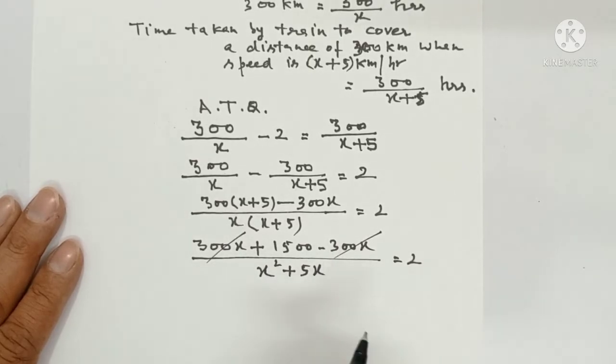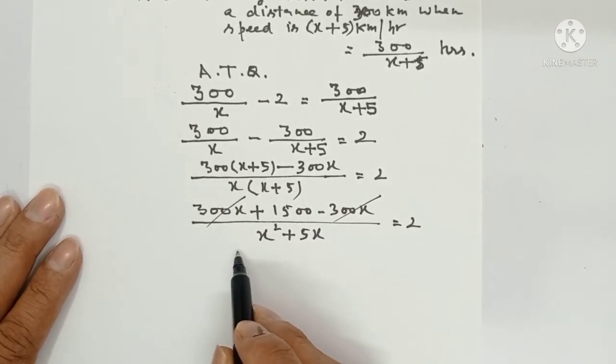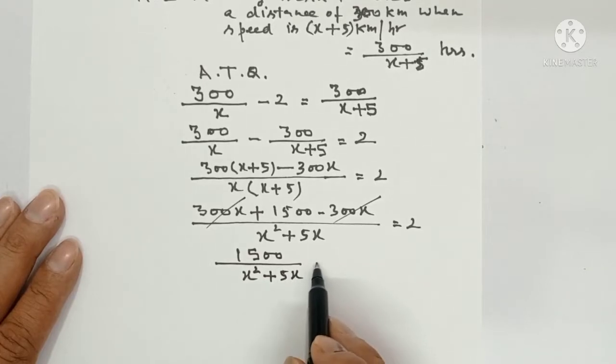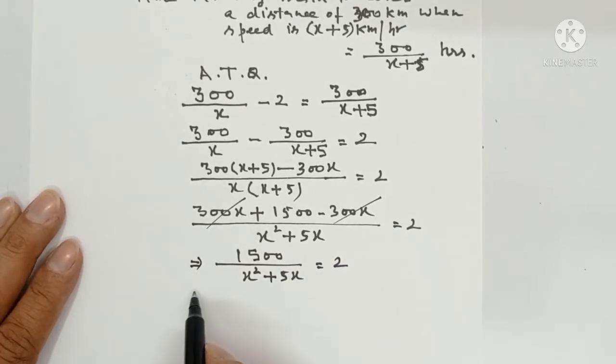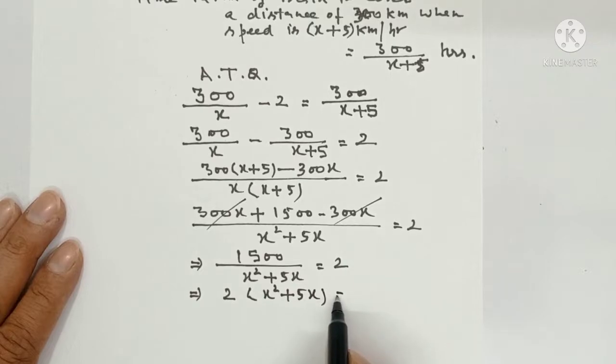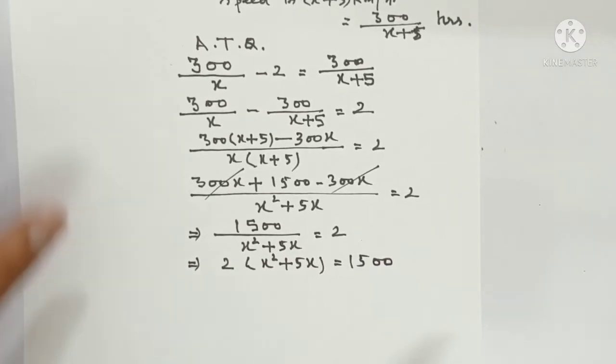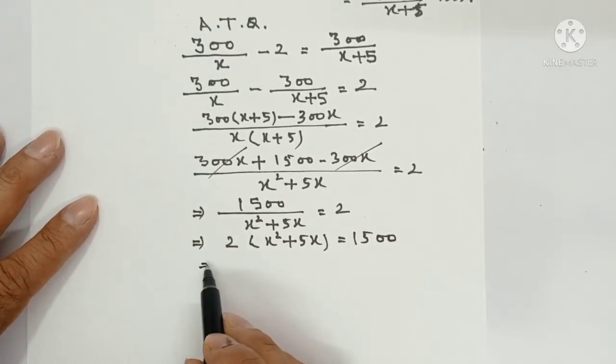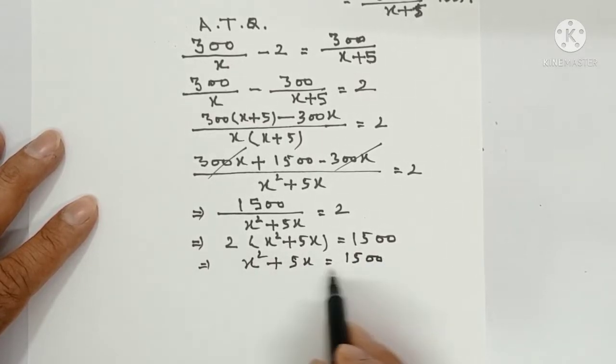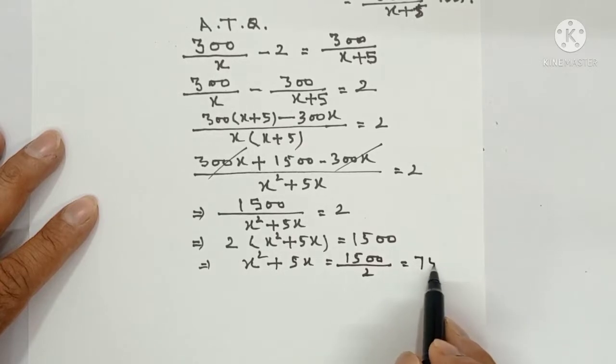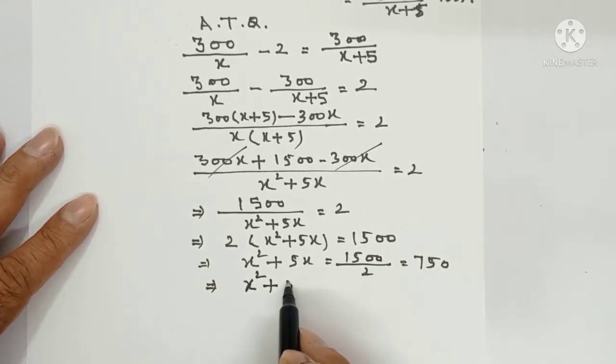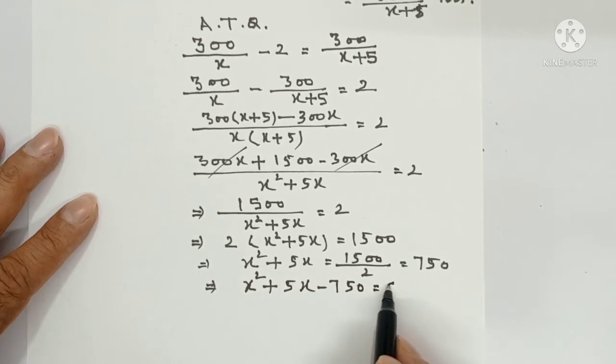300x and minus 300x will be cancelled. So you have got 1500 upon x square plus 5x equals 2. Now you will do cross multiplication. 2 times x square plus 5x equals 1500. So 2 times x square plus 5x equals 1500. x square plus 5x equals 750. Now you will bring this 750 to the left. x square plus 5x minus 750 equals 0.